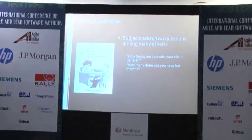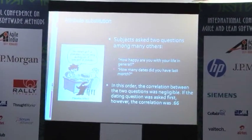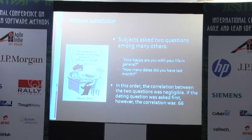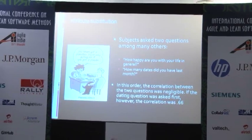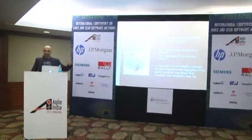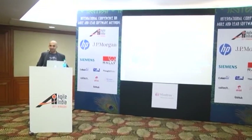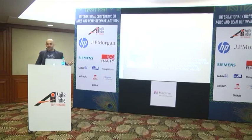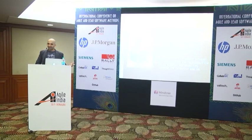The second basic cognitive bias is attribute substitution. For example: when subjects are asked 'How happy are you with your life in general?' and 'How many dates did you have last month?' — asked in that order, the correlation between the two answers is almost negligible. But asked in reverse order, correlation is 0.66. You automatically assume your happiness is linked to the most recent thing in your memory. The information gets substituted — the question was 'how happy are you?' but what you're really answering is 'what made you happy?'